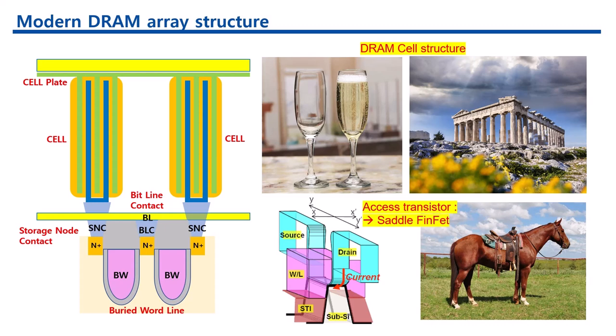4. Champagne glass-like cell structure. This suggests a unique geometric design of the DRAM cell that helps maximize capacitance while maintaining a compact footprint. The analogy to a champagne glass refers to the cell's shape that optimizes the capacitance per unit area.